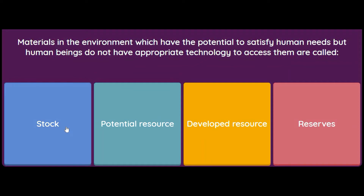This means that if something in our environment can be useful to us but we cannot use it because we don't have the technology — for example, solar energy: we use very little of it now, but in the future there will be solar cars, solar bikes, solar scooters. Similarly, water is made of H₂O — hydrogen and oxygen — but we don't have the technology to use hydrogen as fuel. All such resources are called stock.